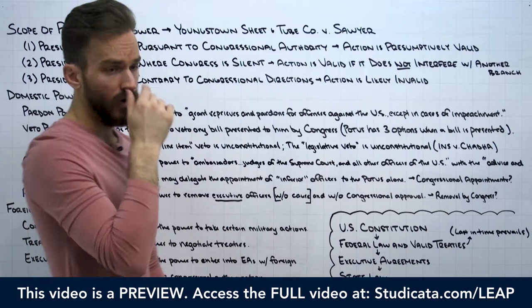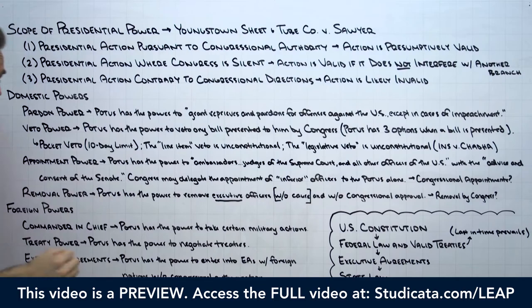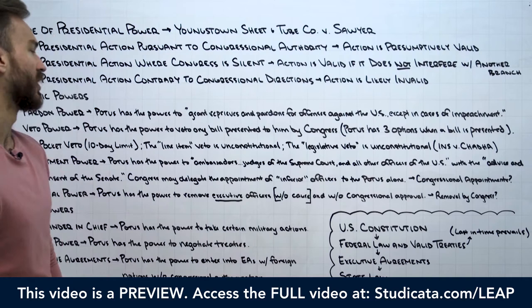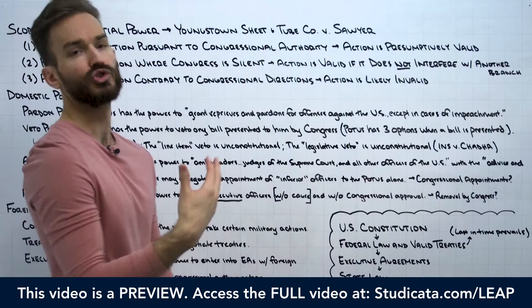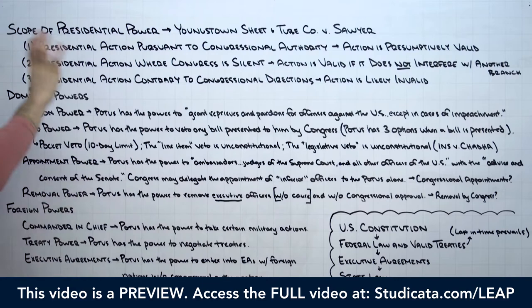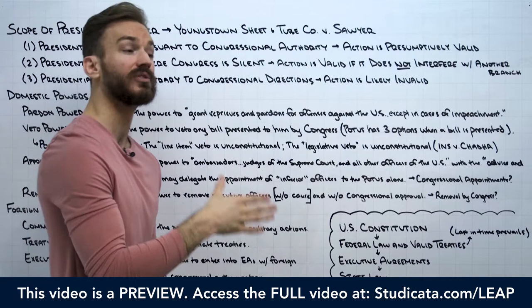We're going to see that the President has some level of implied authority, where we can imply certain powers from the aggregate of powers expressly vested in the Constitution. And there are also express powers — powers we know the President has because they're expressly enumerated in Articles 1 and 2. Things like the pardon power, the veto power, the appointment power, the commander-in-chief power, and the treaty and executive agreement powers. One of the more difficult parts of the analysis is what happens when the President takes an action that's not specifically enumerated.